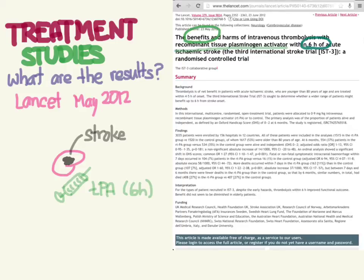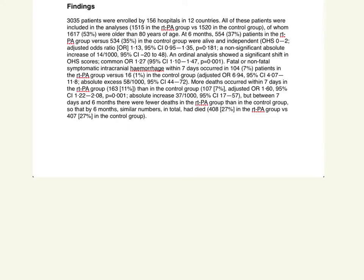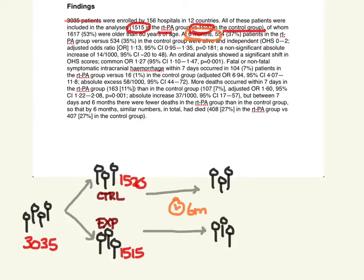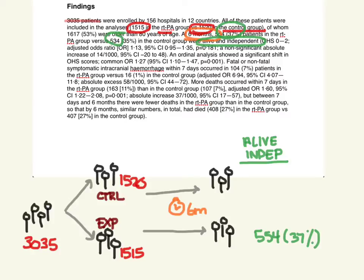Looking at the findings section of the abstract: we start with 3,035 patients from 156 hospitals in 12 countries. They were randomized into two groups — 1,515 in the tPA group and 1,520 in the control group. Over six months, the first outcome — the happy one — was being alive and independent: 554 in the treatment group versus 534 in the control group.